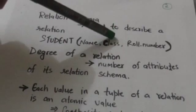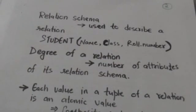Here, student is the name of a relation, and name, class, and roll number are the attributes. The degree of a relation is the number of attributes of its relation schema.